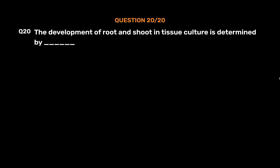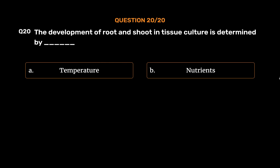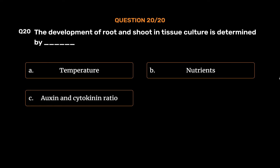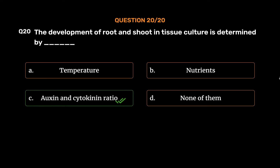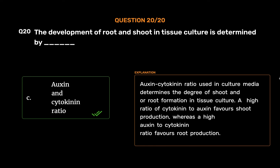Question No. 20: The development of root and shoot in tissue culture is determined by. Option A: Temperature. Option B: Nutrients. Option C: Auxin and cytokinin ratio. Option D: None of them. The correct answer is Option C: Auxin and cytokinin ratio. Auxin-cytokinin ratio used in culture media determines the degree of shoot and/or root formation in tissue culture. A high ratio of cytokinin to auxin favors shoot production, whereas a high auxin to cytokinin ratio favors root production.